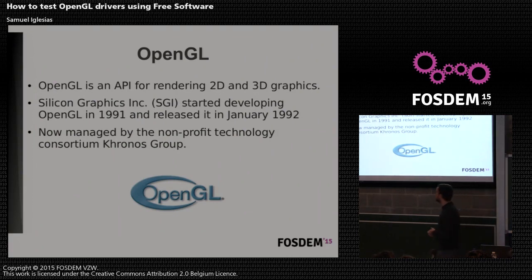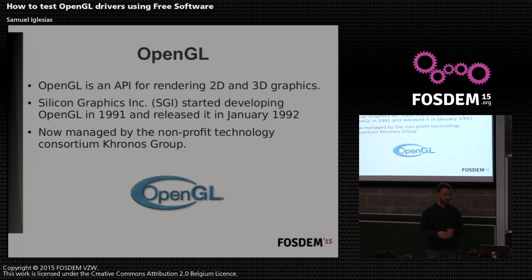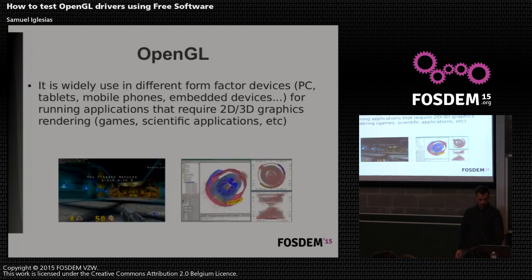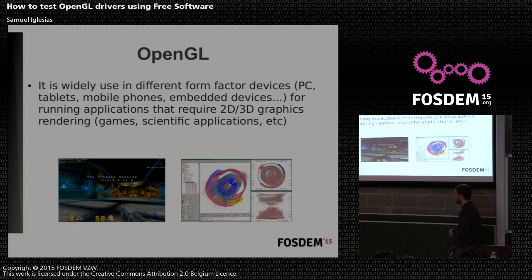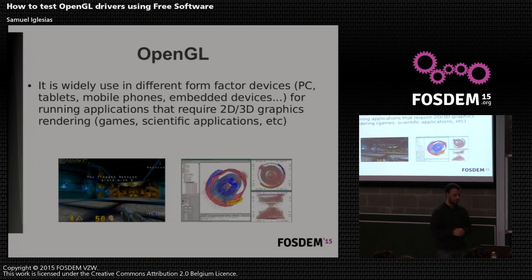Let's start from the beginning. OpenGL is an API for rendering 2D and 3D graphics. It was originally designed by Silicon Graphics, but nowadays is managed by a nonprofit technology consortium called the Khronos Group. It's widely used in different form-factor devices — PCs, tablets, mobile phones, embedded devices — for running applications that need 2D and 3D graphics rendering, most often because they need hardware acceleration, for example games, scientific applications, et cetera.